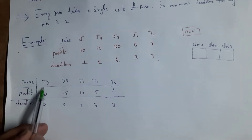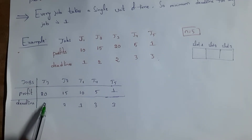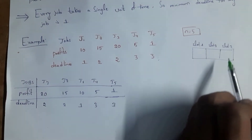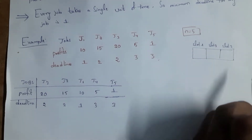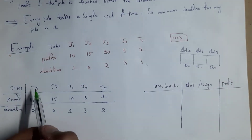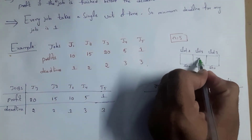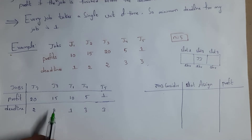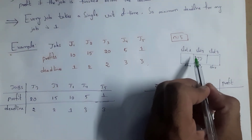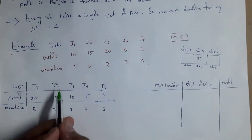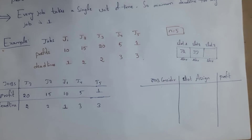From the sorted table, job J3 has a deadline of 2 hours, so I can place J3 in either the first or second slot. Since both slots are empty, we try to place the job in the latest possible slot, so I place J3 in Slot 2. Similarly, job J2 also has a deadline of 2 hours, so it can go in Slot 1 or Slot 2, but Slot 2 is taken by J3.